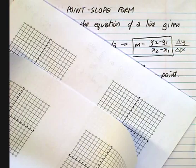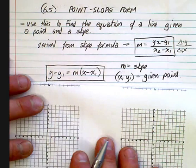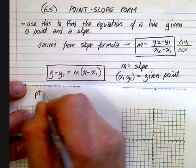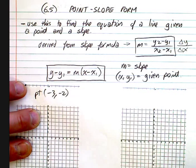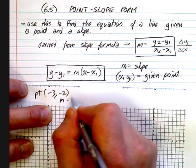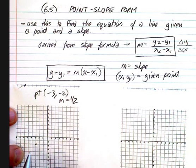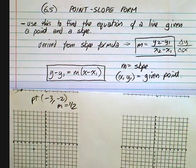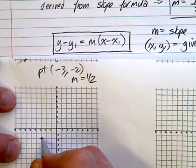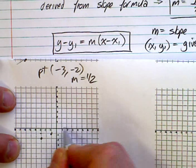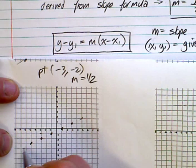If I gave you a point at negative 3, negative 2, and said there was a slope of one half, that means you'd go up 1 over 2, up 1 over 2, up 1 over 2 — and you've got a pretty good idea of what's going on. The slope is one half.